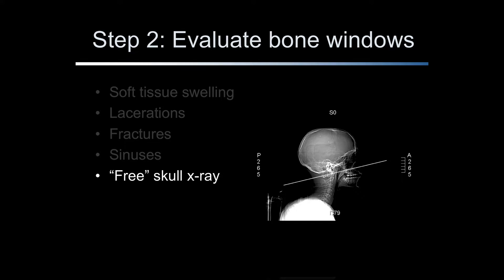A lateral skull film is used as a scout to align the scanner gantry and orient the CT slices. Certain skull fractures, foreign bodies, and post-surgical defects may be seen on the scout film. Don't overlook this image as a source of useful information.